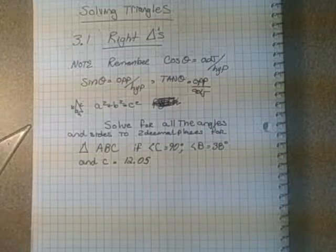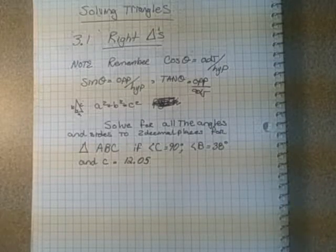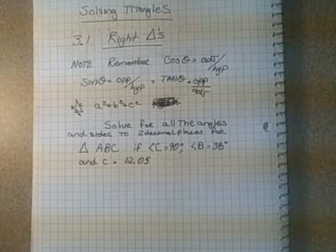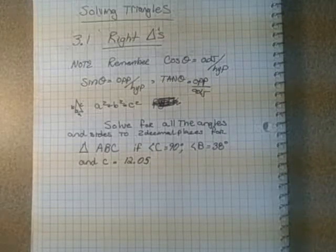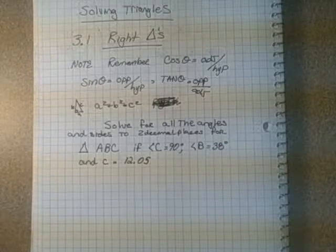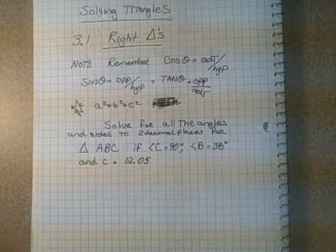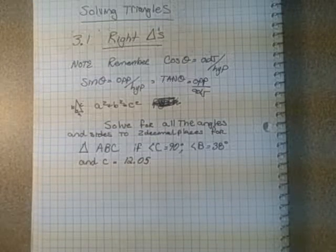And so we're going to start out here by trying to remember, don't forget what cosine is adjacent over hypotenuse, sine is opposite over hypotenuse, and tangent is opposite over adjacent, and also the Pythagorean theorem, a squared plus b squared equals c squared, where c is the hypotenuse, and a and b are the other two sides.